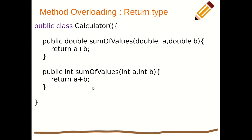We can also implement method overloading through the use of return types. In class Calculator, we have 'public double sumOfValues' with parameters double a and double b, returning the sum. Another method named 'sumOfValues' with the same number of parameters — int a, int b — returns an integer sum. The distinction between these methods is through the return type: one is double and the other is integer.